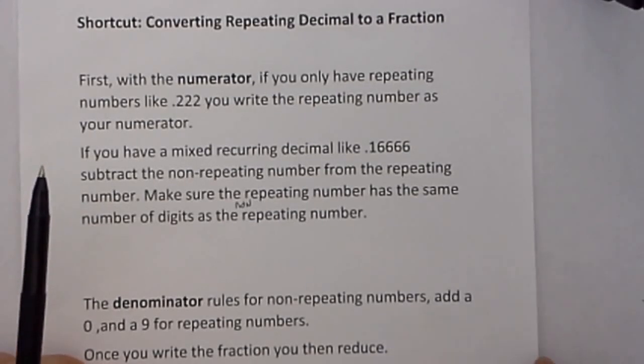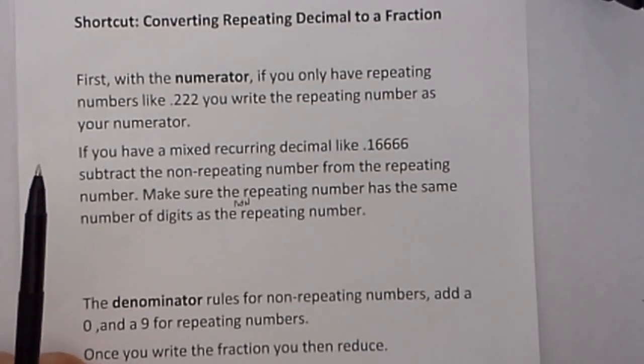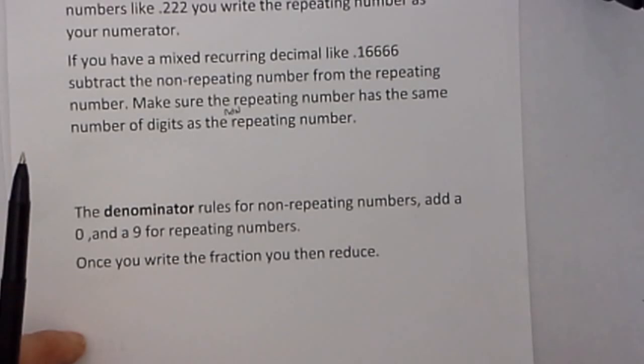The denominator rules for non-repeating numbers, add a 0, and a 9 for repeating numbers. Once you write the fraction you then reduce.